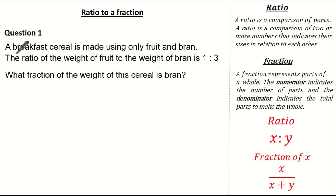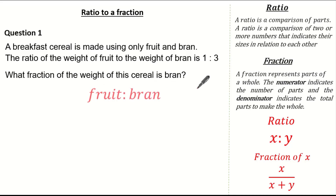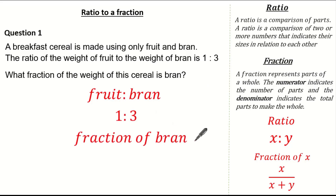The question says a breakfast cereal is made only using fruit and bran. The ratio of the weight of fruit to the weight of bran is one to three. The question asks: what fraction of the weight of the cereal is bran? We know three parts represent bran and the total parts is four, so the fraction of bran is three over four.